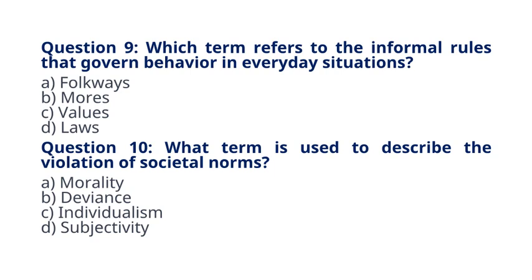Question 10. What term is used to describe the violation of societal norms? A. Morality. B. Deviance. C. Individualism. D. Subjectivity. The correct answer to question 10 is option B, Deviance. Explanation: Deviance refers to actions that violate societal norms and expectations.